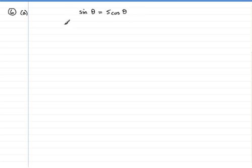If we do that we are therefore going to have that sin theta over cos theta is going to equal simply 5. And sin theta over cos theta then is the tan theta so we finish with tan theta equals 5.